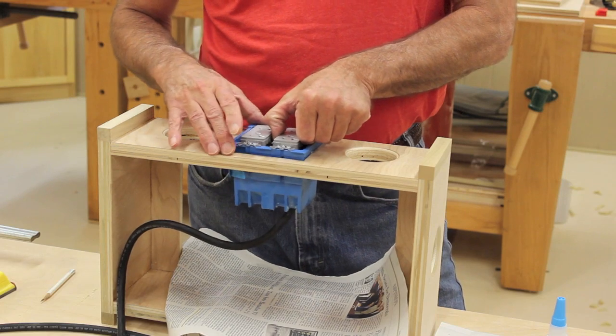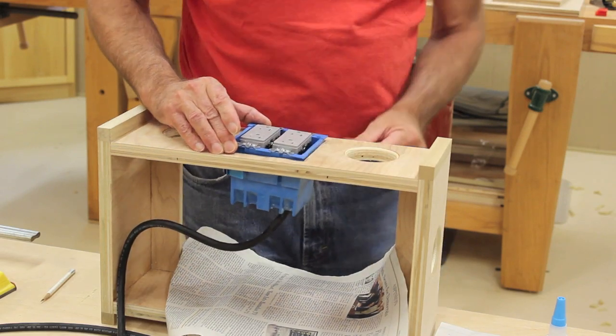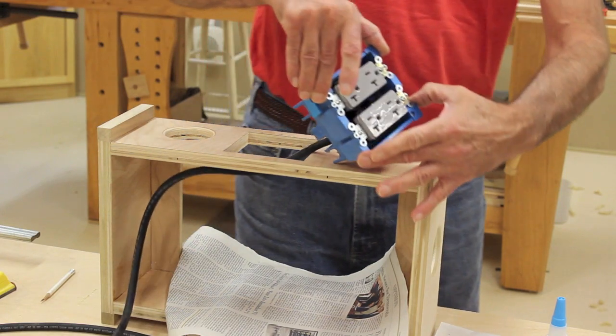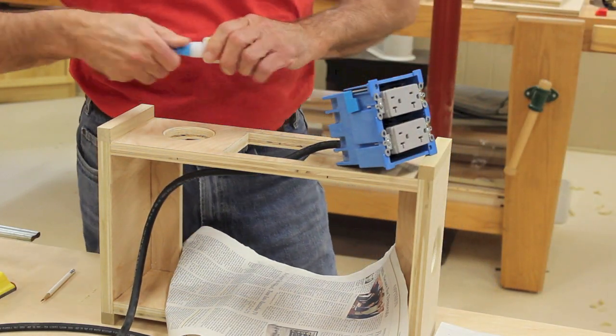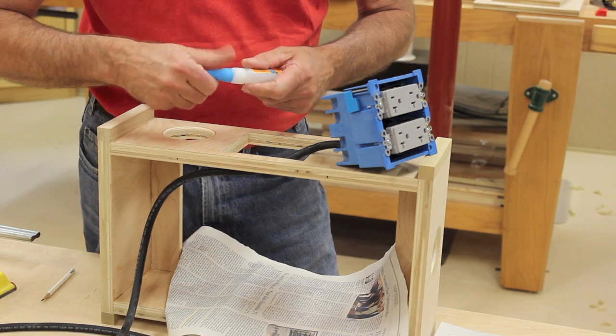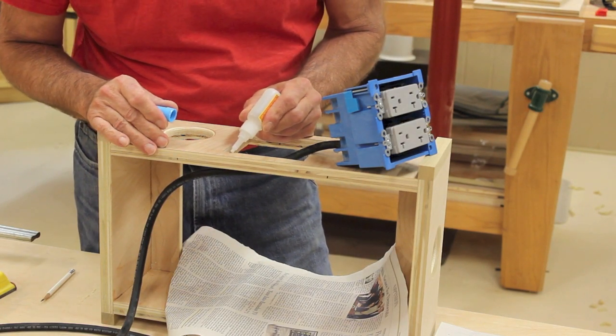What I'm going to do is use a little CA glue and put it in those areas where I marked them off, and I'm going to set this in place and glue it in.